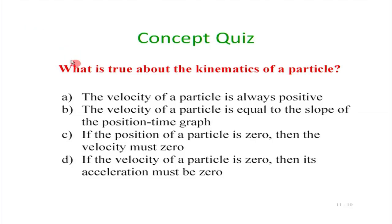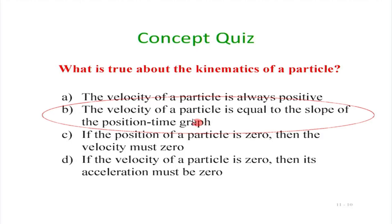A small quiz: what is true about kinematics of a particle? First option — the velocity of a particle is always positive — of course not. Velocity can be positive or negative. The velocity of a particle is equal to the slope of the position-time graph — this is the only true statement here, a very important statement. In elementary calculus it is simple, but when we come to mechanics the slope of the position-displacement curve has a specific mechanical meaning — it is nothing but the velocity.